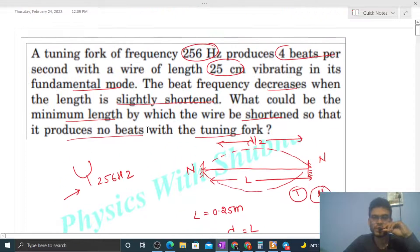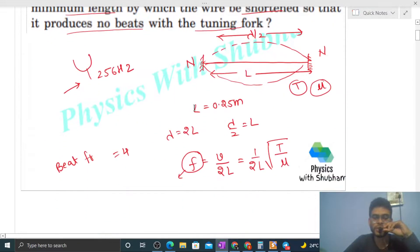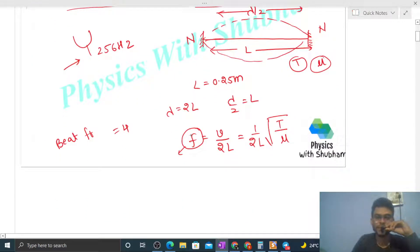So for that, what is given? Beat frequency is given. Beat frequency between this tuning fork and this wire is given as 4 beats per second. Beat frequency is nothing but the difference in frequencies. It means 256 and f have a difference of 4.